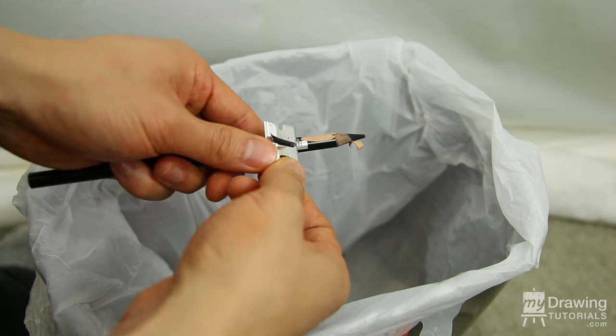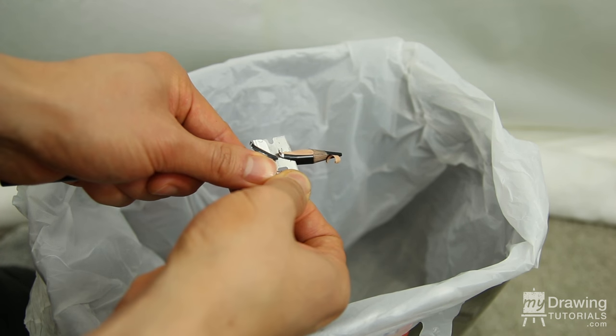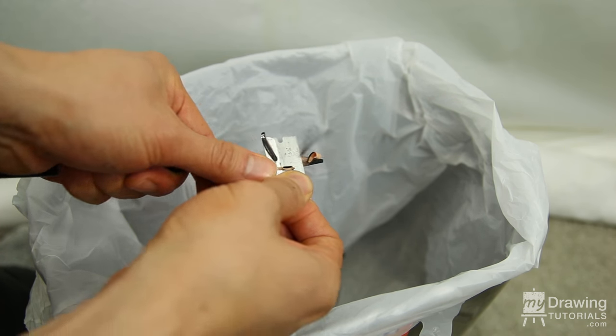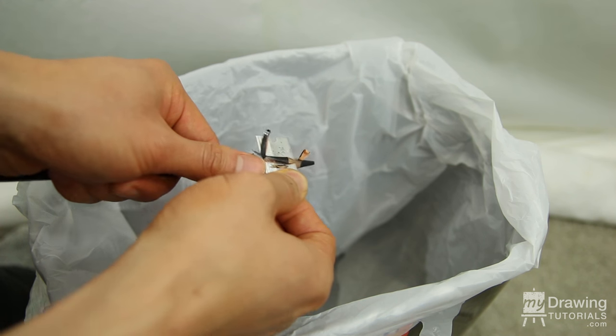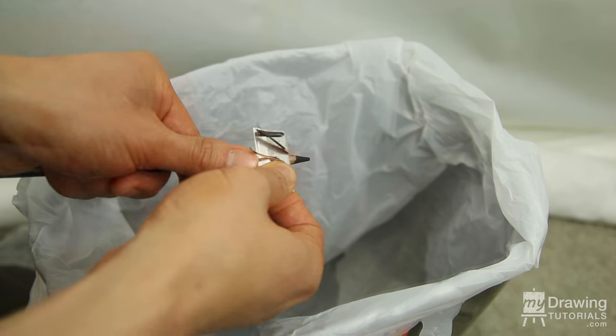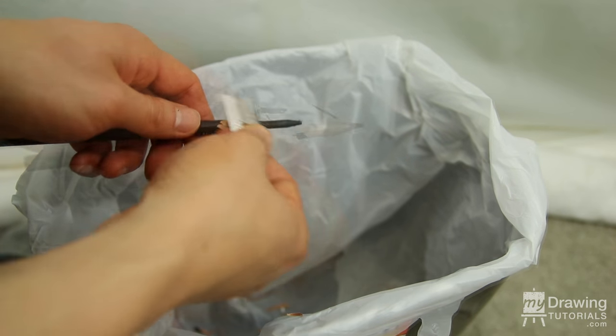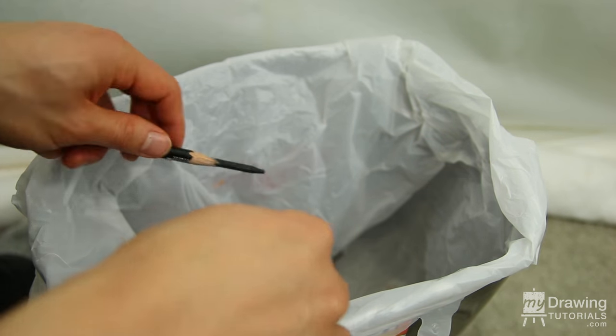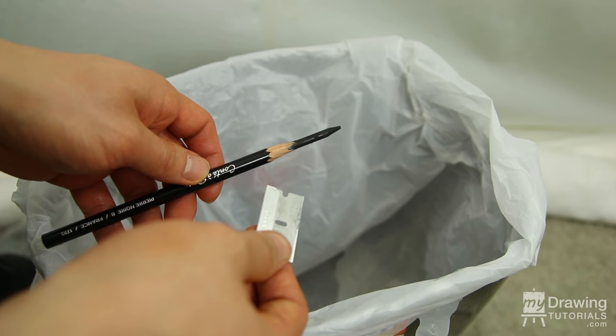As you get closer and closer to the lead, try to only take off a thin layer of wood at a time so that you don't risk going too far and cutting into the lead. You'll want to keep doing this until you have about an inch of lead exposed and there's a smooth taper from the wood to the lead.